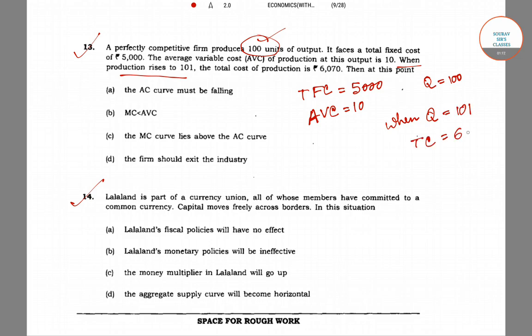As already mentioned, total fixed cost is 5000, so fixed cost will not change — whatever the output, fixed cost remains the same. So we can say that the total variable cost will be 1070, because 6070 minus 5000 equals 1070. That will be the total variable cost when quantity is 101. So average variable cost will be...